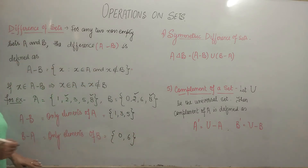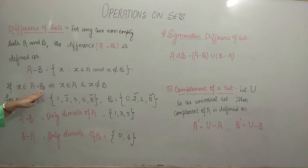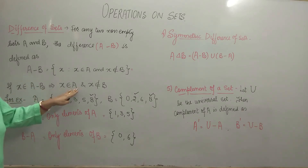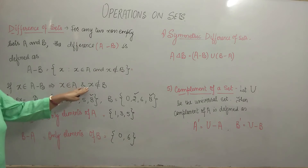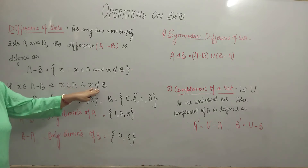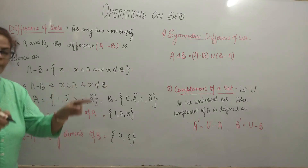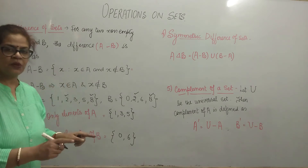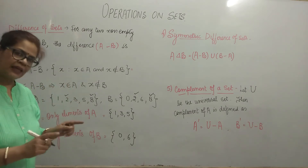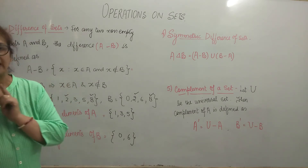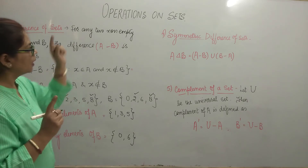So if any element X belongs to A minus B, that means X is the element which belongs to A and it does not belong to B. Agar koi common element hai, toh woh A minus B mein nahi aayega — woh B minus A mein aayega.